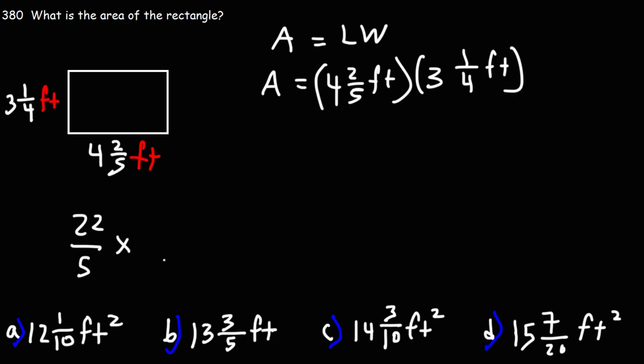For this one, the denominator will remain 4. Then we need to multiply 3 by 4, which is 12, and then add 1. So that's 13. So it's 13 over 4.